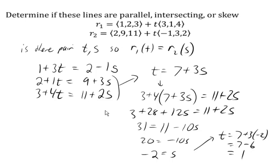So now we need to check the x. So we need to say is 1 plus 3 times the t value we came up with equal to 2 minus 1s, where negative 2 is the s value that we came up with. Well, let's see. 1 plus 3 is 4. Is that equal to 2 minus negative 2 is 4? Yes.